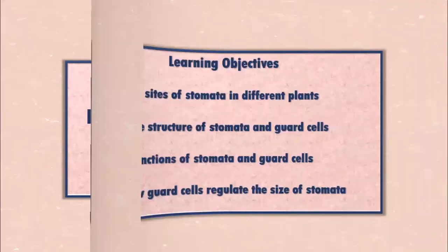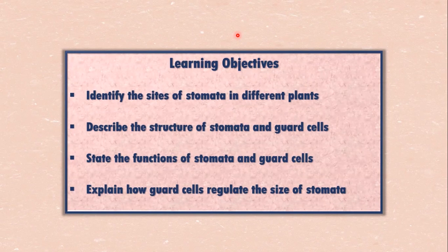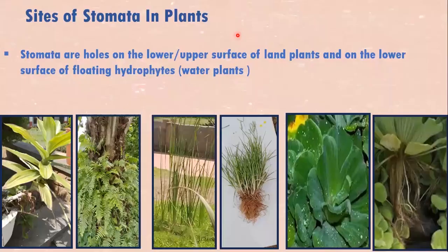Learning objectives: be able to identify the size of stomata in different plants; describe the structure of stomata and guard cells; state the functions of stomata and guard cells; explain how guard cells regulate the size of stomata.